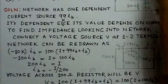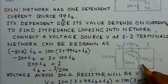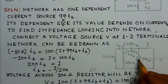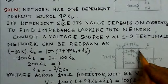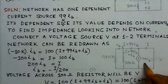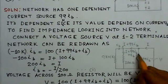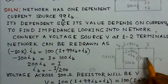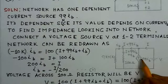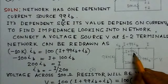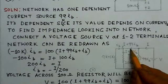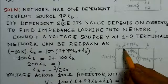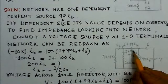So the current direction would be different here. The current source 99 IB is shown here. The current into this part of the network is I plus 99 IB flowing into this section.